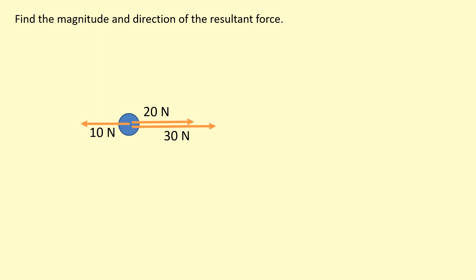Here we have a free body diagram and we are asked to find the magnitude and direction of the resultant force. If two forces are in the same direction, you add them together, so we have 50 newtons towards the right. And if forces are in opposite directions, then you subtract, so it will be 50 newtons minus the 10 newtons to give us 40 newtons to the right.